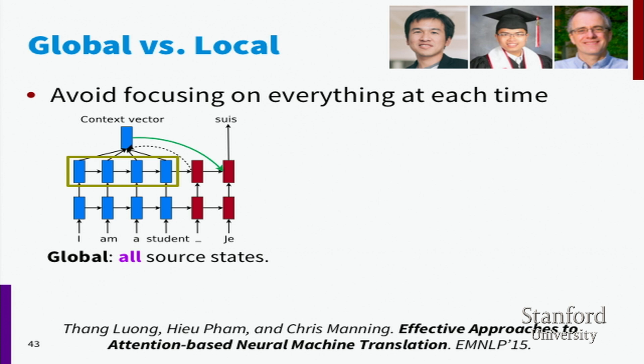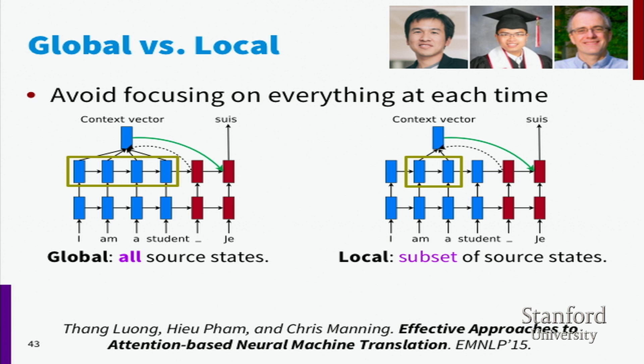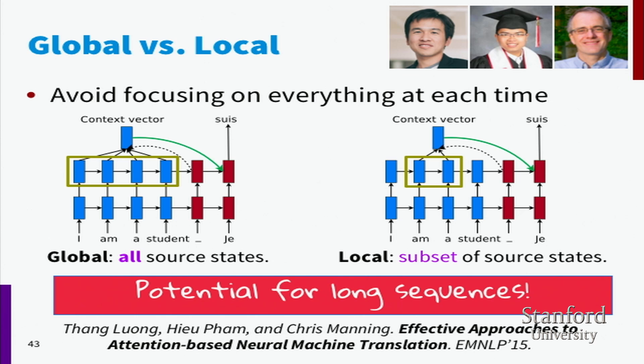Another idea explored for attention: rather than spreading attention over the entire source encoding, you can use local attention models that only attend to a subset of states at one time. This is more of an exact retrieval from memory and can be especially good for very long sequences, though it isn't necessarily compellingly better on performance numbers so far. The global soft attention model is nice because it's continuous and differentiable, but can be computationally unpleasant for very long sequences since backpropagation goes into everywhere all the time.